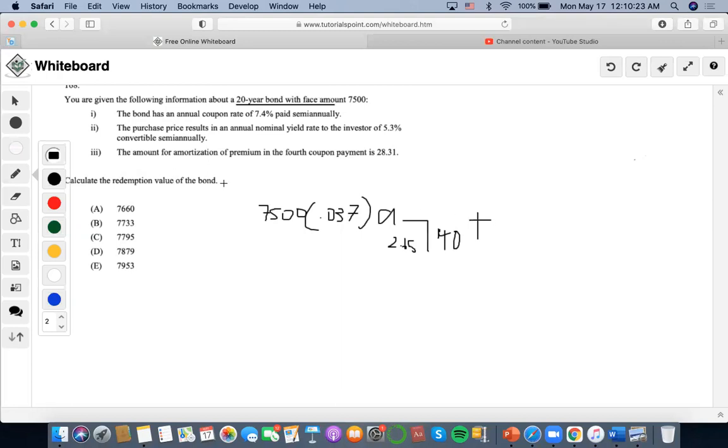We want to calculate the redemption value of the bond. The problem says the amount for amortization is a premium, and the fourth coupon payment is $28.31.